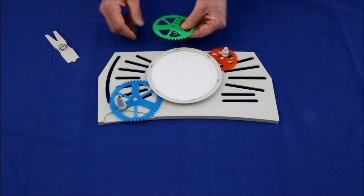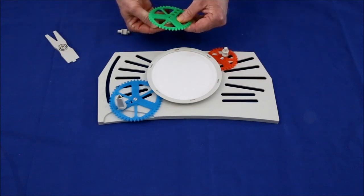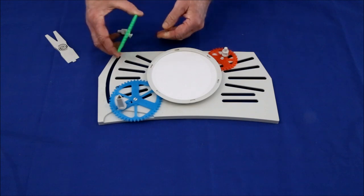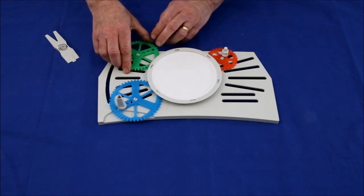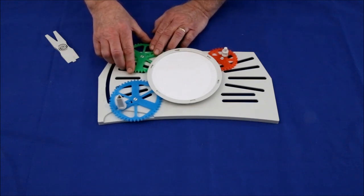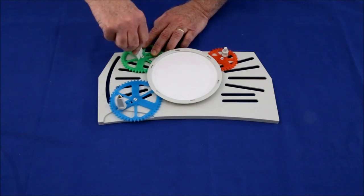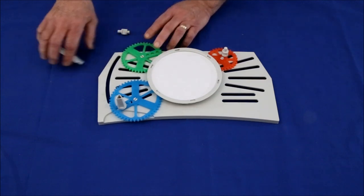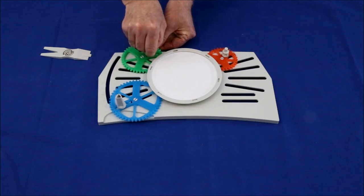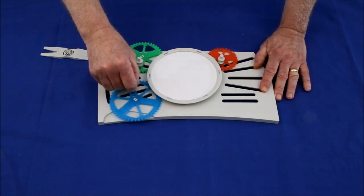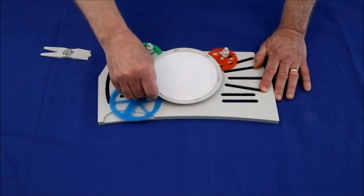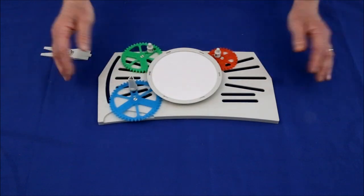Now we'll put a 41-tooth gear on the opposite side. And you can see why I like this machine. It just simply snaps together, and that's it.